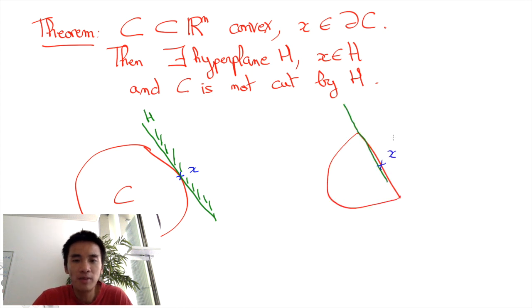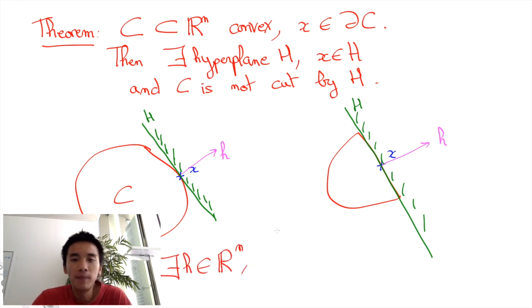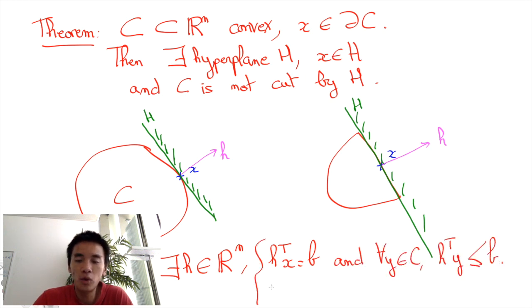Equivalently, the hyperplane can be described by a normal vector H and a real number B. To say that H goes through x means that H transpose x is equal to B. And to say that C is on one side means that H transpose y is less than or equal to B for all y in C.